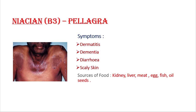The third is niacin, that is vitamin B3. The deficiency disease is pellagra. Symptoms are dermatitis, dementia, and diarrhea — that is why we commonly call pellagra the 3D disease. Dermatitis means skin disease, dementia means loss of memory, and diarrhea means loose motions. Scaly skin is also observed. Sources of vitamin B3 are kidney, liver, meat, egg, fish, and oil seeds — children should not forget to eat these food items.